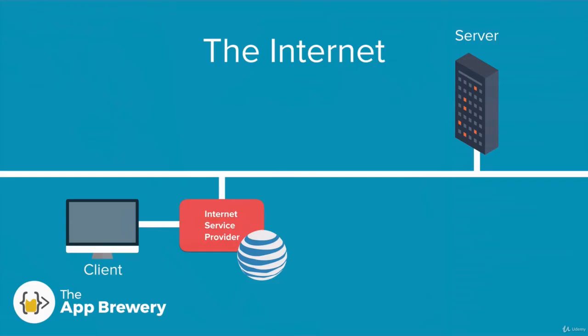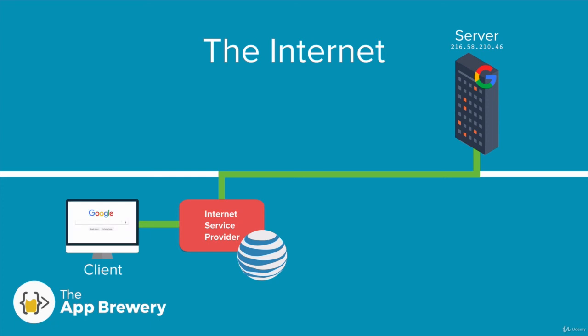Once I've gotten the IP address of the website I want to access, my browser sends another message through the internet service provider via the internet backbone to the server located at that address — 216.58.210.46. The computer located at that address is, of course, the Google server. On this server are all of the files I would need to view the Google homepage. The server then sends all of those files back to me through the internet backbone, and I get to see the Google homepage in my browser. And all of that happens in a matter of milliseconds.